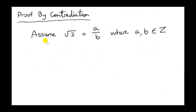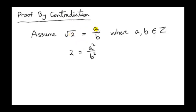So with those facts in mind, we can now prove that root 2 is irrational. We're going to do a proof by contradiction, which means we will assume that root 2 is a rational number. If it's a rational number, it's the ratio of two integers, a and b. We will derive some consequences of this assumption and see if it leads to a contradiction. If root 2 is rational, we can square both sides and we get 2 equals a squared over b squared.